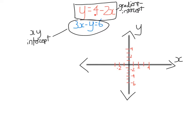So let's first graph this one here using the gradient intercept method. Notice this is an equation — it has an equal sign, not an inequality. So this is how you use gradient intercept form when it's y equals something. Remember, the number in front of x is the gradient, so minus 2 is the gradient. The number by itself is the y-intercept. That's why it's called gradient intercept — you can just read off the gradient and y-intercept.